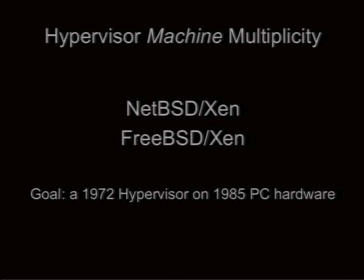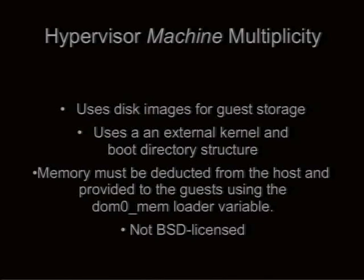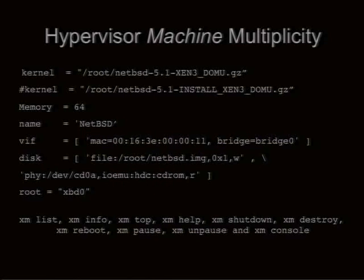Hypervisor machine multiplicity — has anyone worked with Xen on one of the BSDs? I did work with NetBSD Xen for a year; it was remarkably stable. The goal with Xen is to have a 1972-style hypervisor on 1985 PC hardware prior to hardware assistance. Like software VMs, you generally have a file system in a disk image, an external kernel booted by the Xen system, and you deduct memory from the host. Key point: it's not BSD licensed. Configuration specifies memory, the boot image, and it had early hardware pass-through.